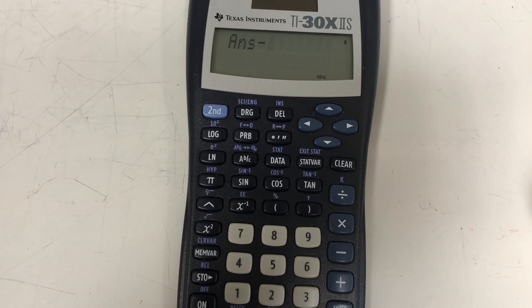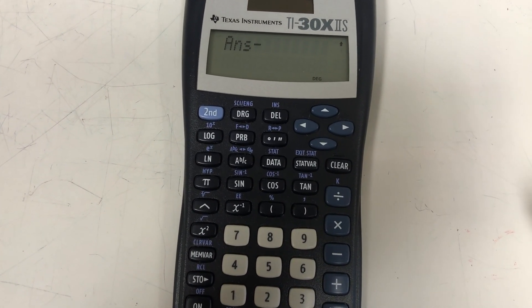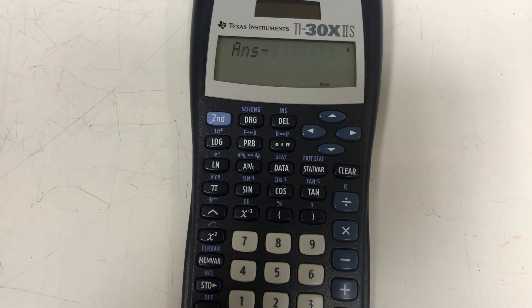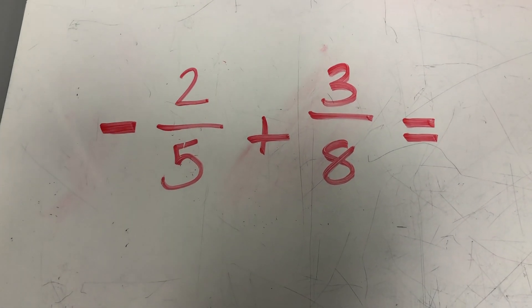But if I push that right away, you'll see that it says ANS, or that stands for answer. It's going to take the previous answer and then subtract whatever I tell it to do next. That's not what we want to do in this problem. We just want to have a negative two-fifths.